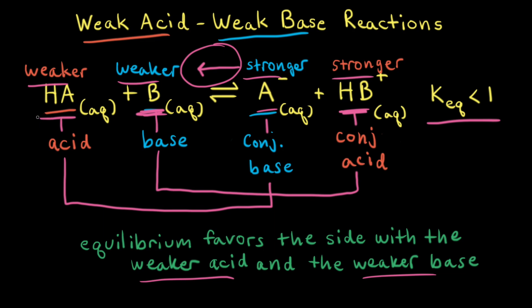So comparing our two acids, HA and HB⁺, this time HB⁺ is the stronger acid of the two. And for our bases, B and A⁻, this time A⁻ is the stronger base of the two.